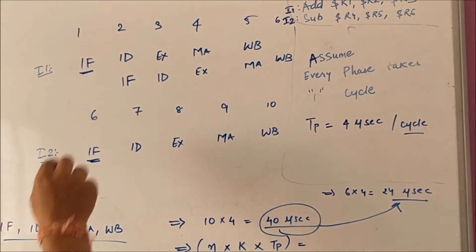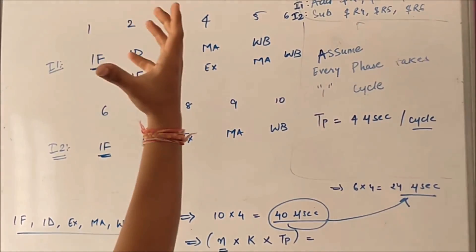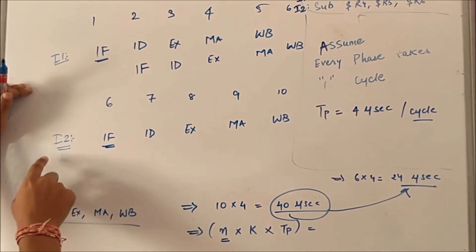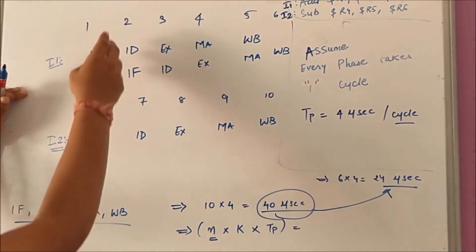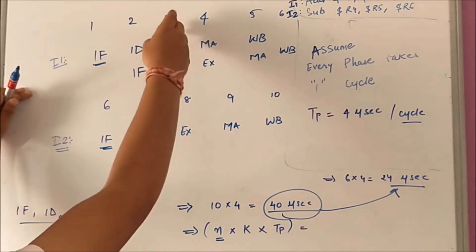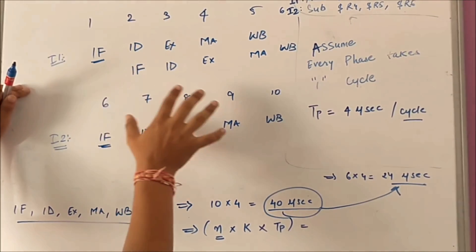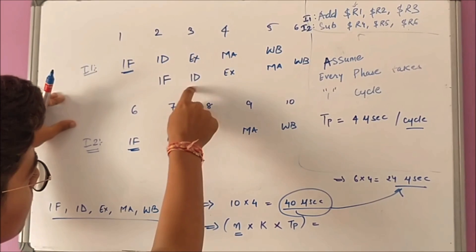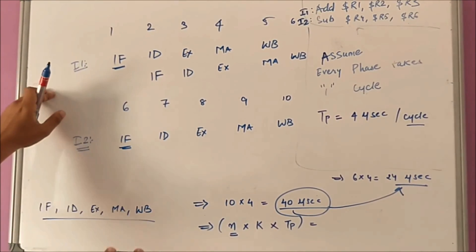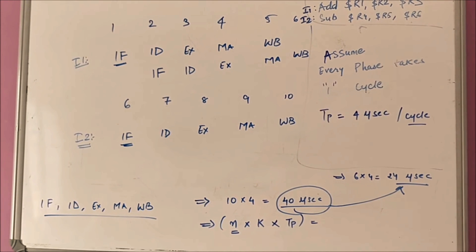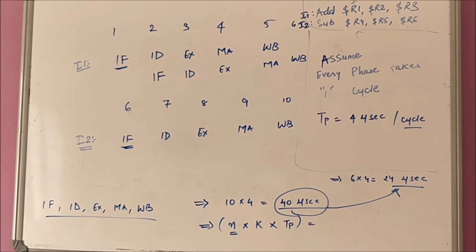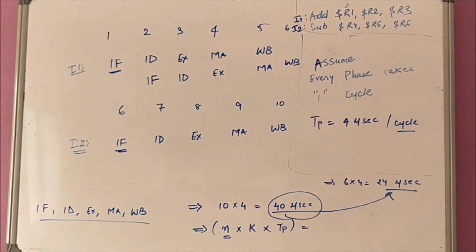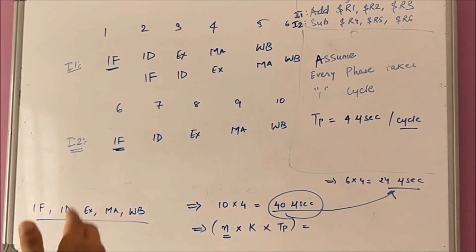While executing instruction decode of instruction 1, we can use instruction fetch for instruction 2. So instruction fetch of instruction 2 can be done in the second cycle. Similarly, at execution time, instruction decode hardware is free because on the second cycle ID got completed. So in the third cycle we can do instruction decode of I2, because the instruction decode hardware is free. This is what we can do to minimize the time so that instructions get completed in less time.